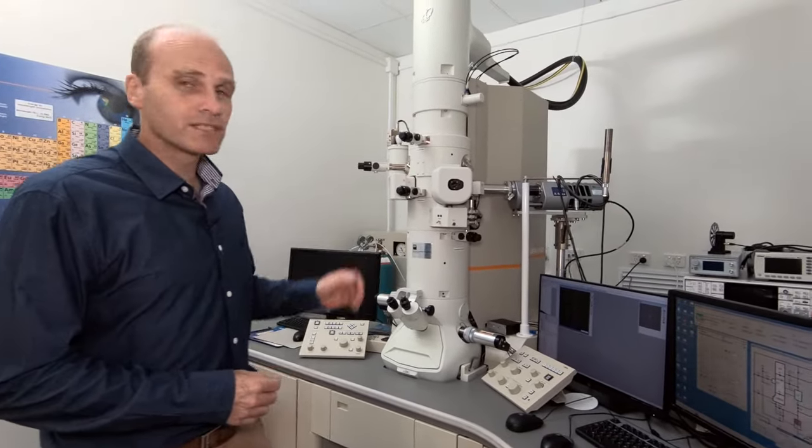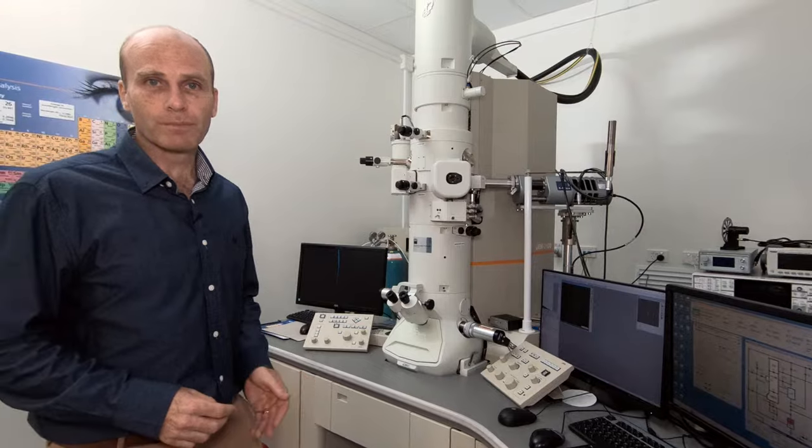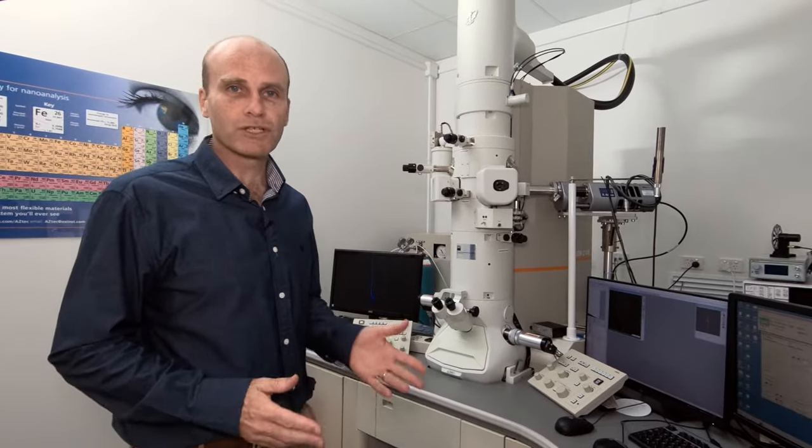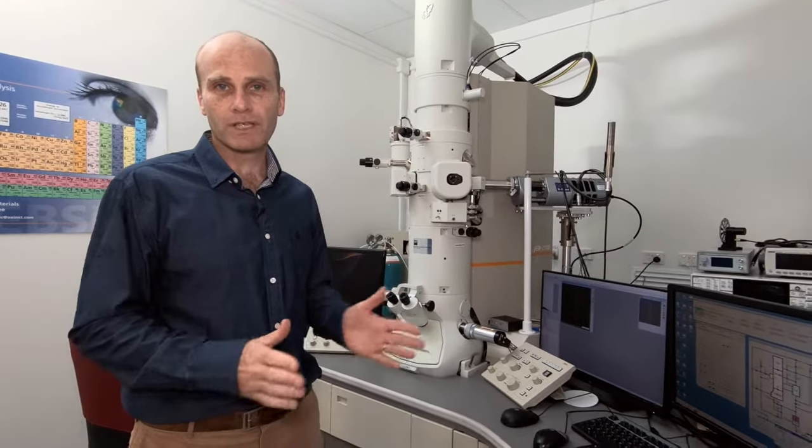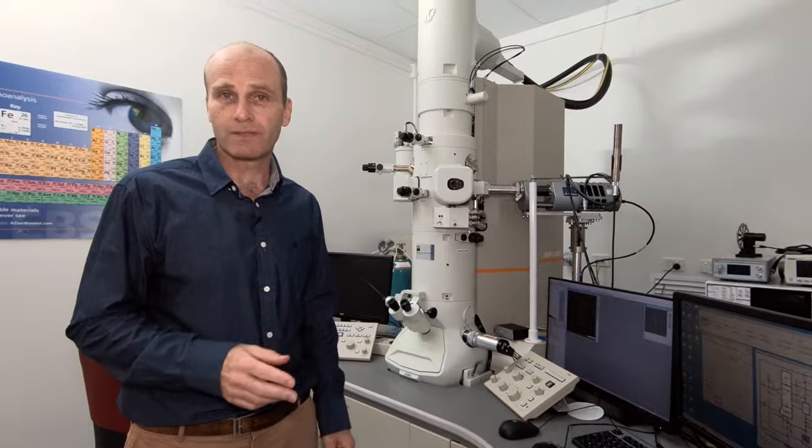This is the TEM that we're going to use in our experiment today. The TEM has the advantage over, say, the light microscope in that it's capable of looking at things at much higher resolution. A light microscope can only go down as far as 200 to 300 nanometers, whereas with the TEM we can see features that are as small as a nanometer or even less.